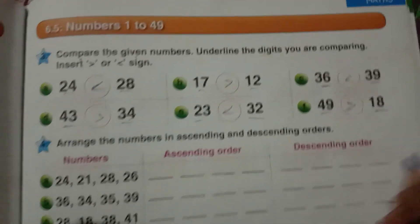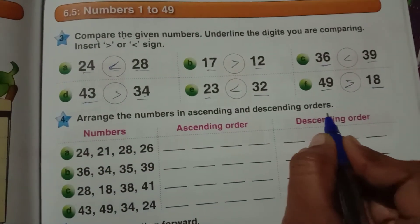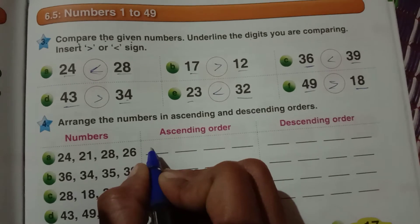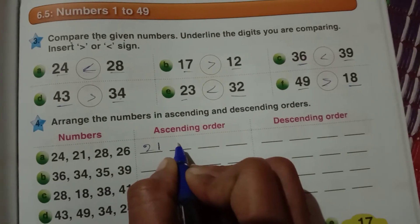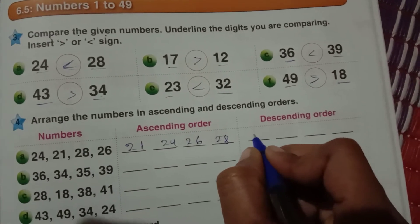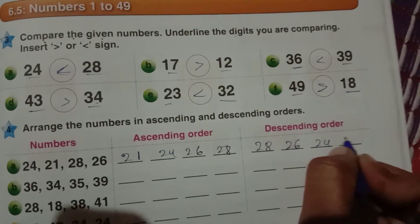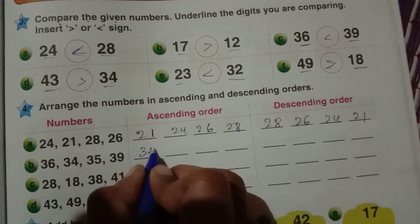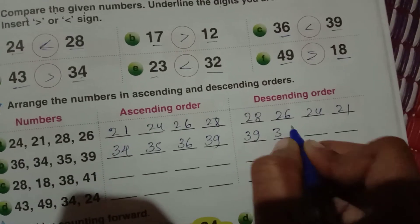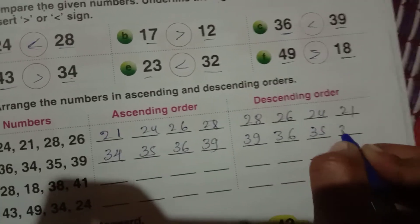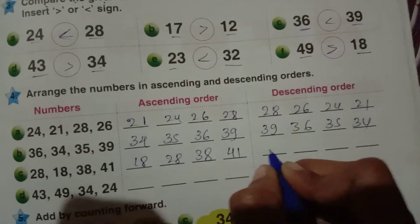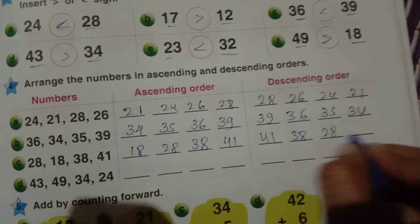Arrange the numbers in ascending and descending orders. 24, 21, 28, 26. Ascending order, you have to write, first you write small number: 21, 24, 26, 28. Descending order: 28, 26, 24, 21. Next: 34, 35, 36, 39 becomes 39, 36, 35, 34. Next: 18, 28, 38, 41 becomes 41, 38, 28, 18.